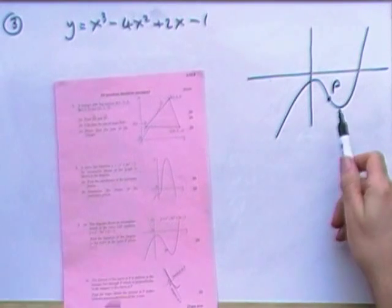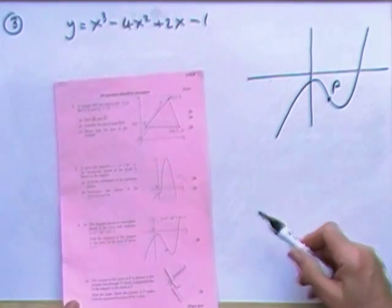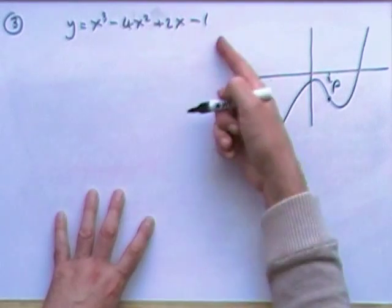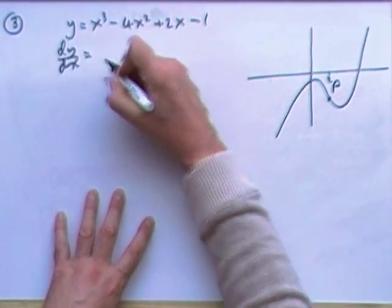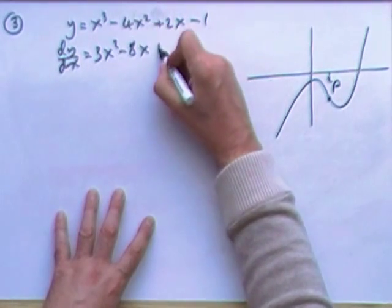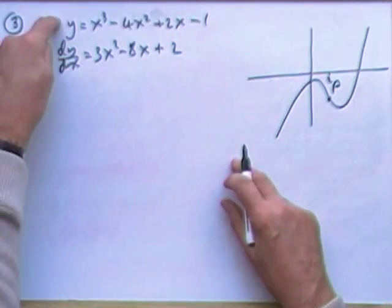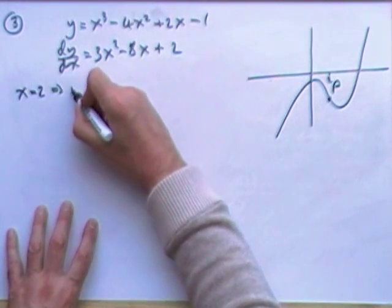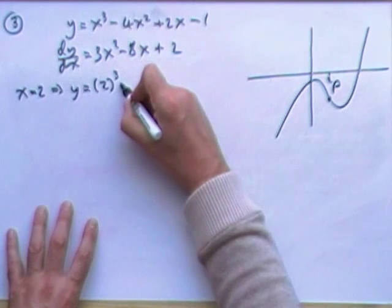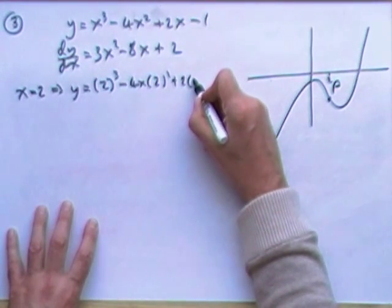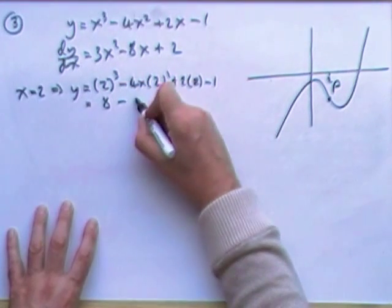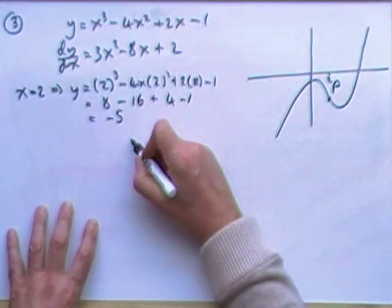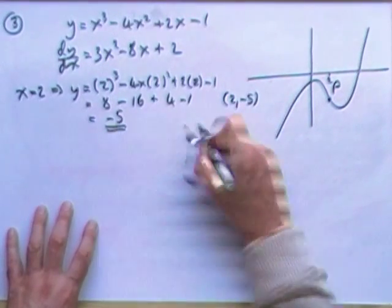Number three. Another incomplete sketch. Find the equation of the tangent at the point p, where x equals two. Well, that's a bit straightforward then. There's the equation of the curve, the coordinate equation. Differentiate it, and you can get the gradient equation. Three x squared minus eight x plus two. And if it says x equals two, print it into that one to get the y-coordinate, print that one to get the gradient. So x equals two means that y will be two cubed minus four times two squared plus two times two minus one. What's that? That's eight, sixteen, four, and one. And that is negative five. So you've got the point two, negative five. So that was the first bit.